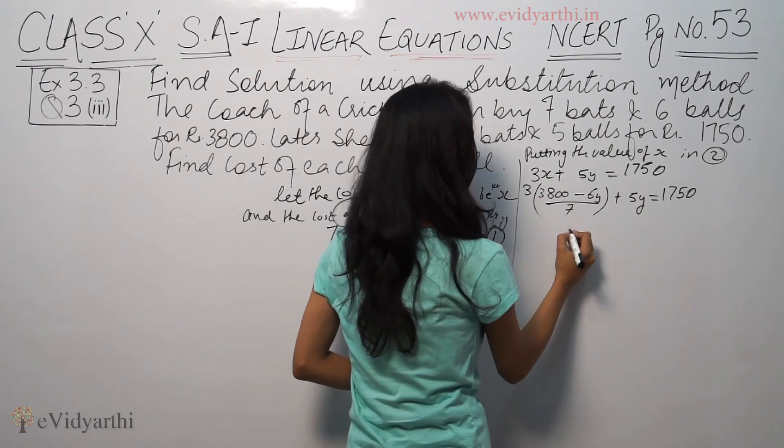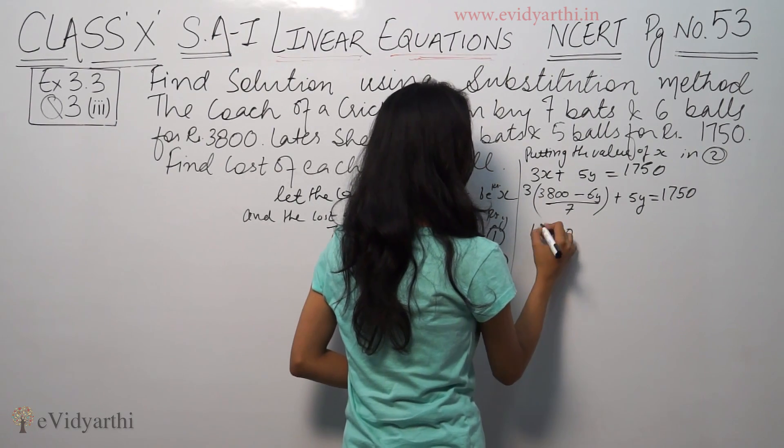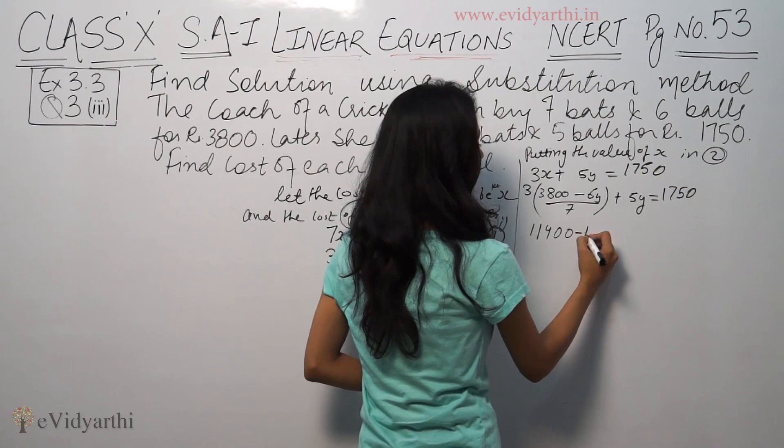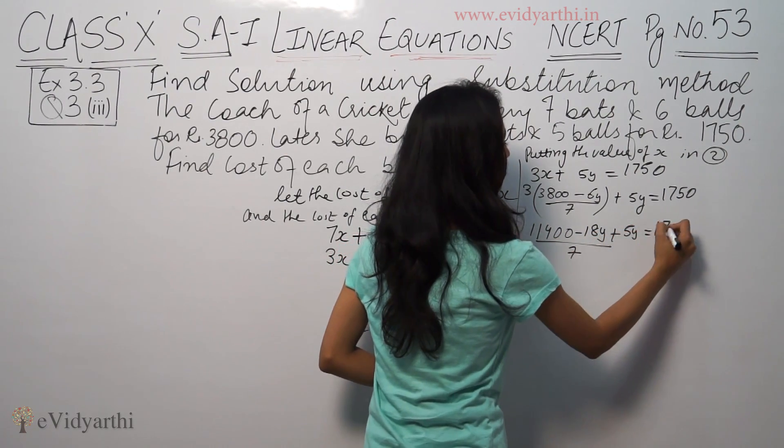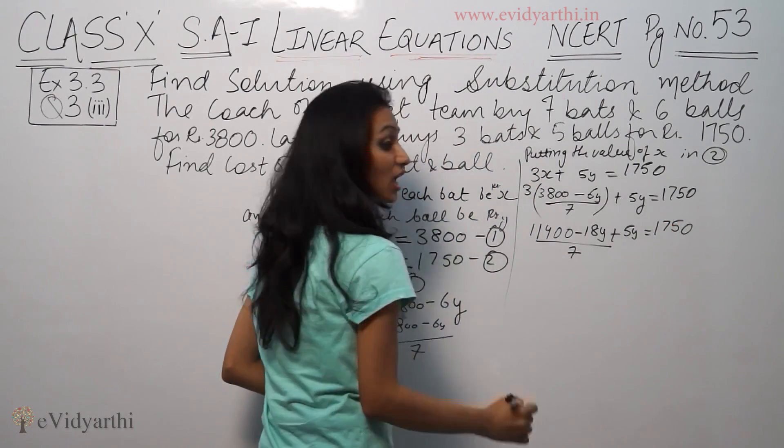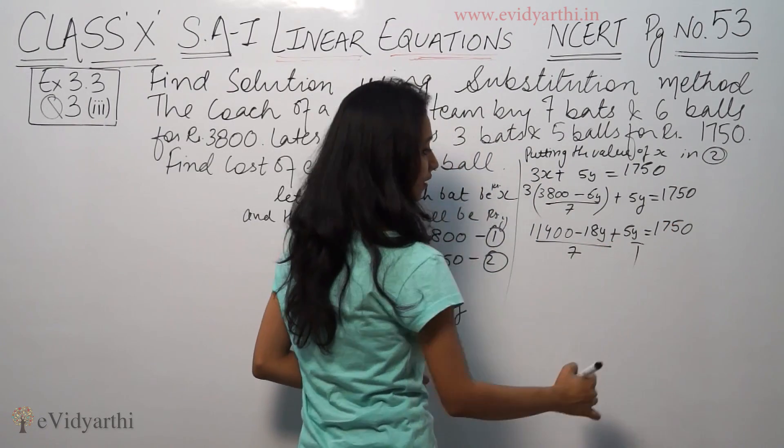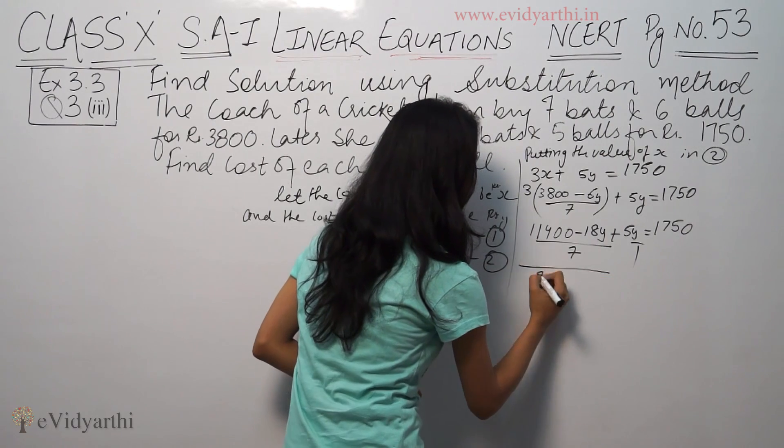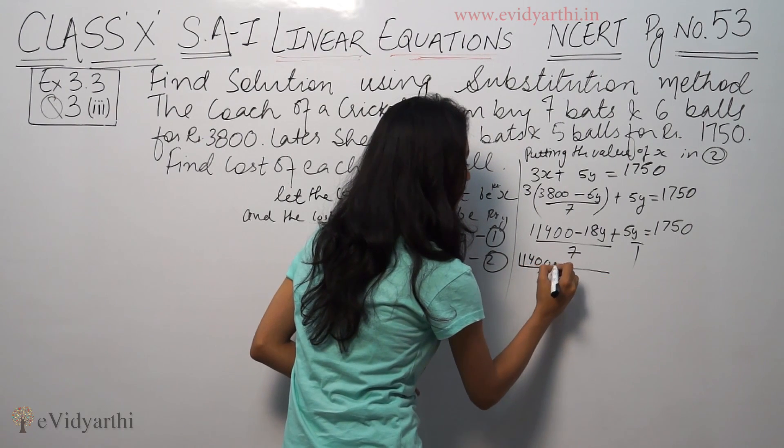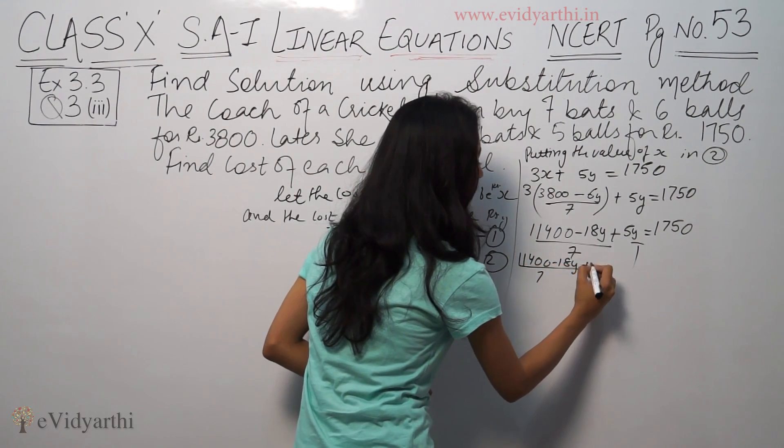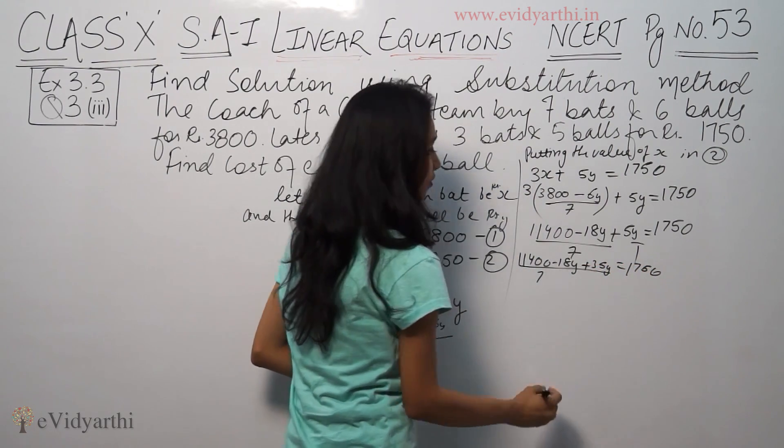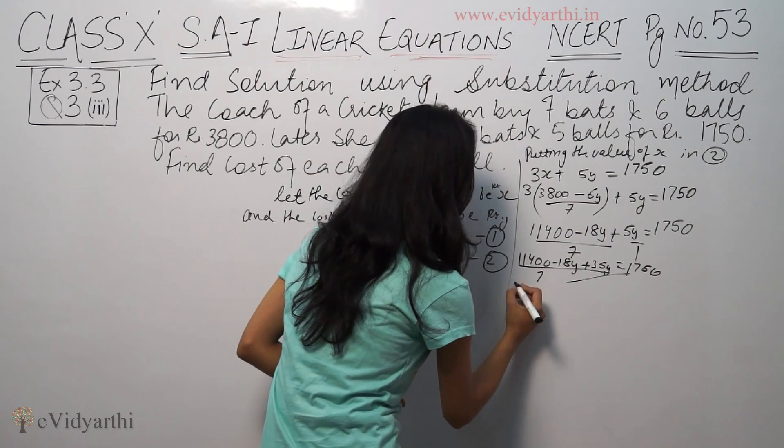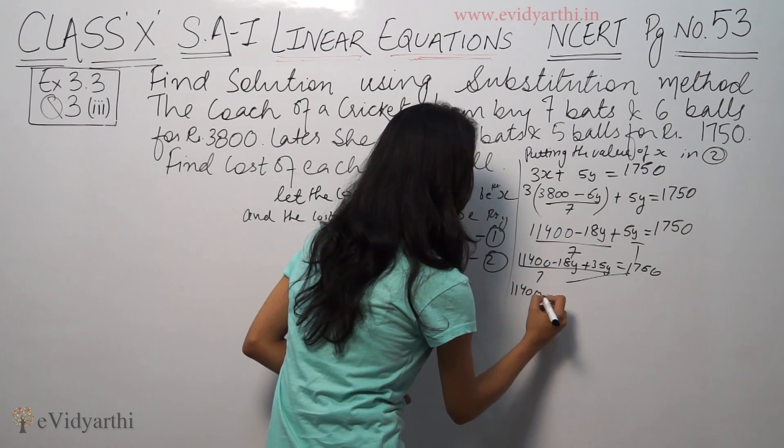So 3 times this is (11400 minus 18y) divided by 7 plus 5y equals 1750. Taking LCM 7, we get 11400 minus 18y plus 35y equals 1750 times 7.